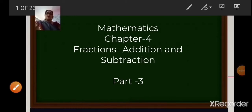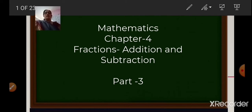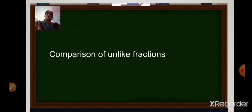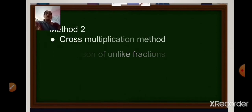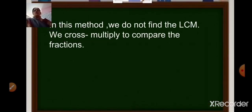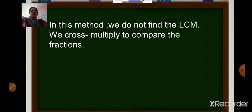Hello, Sairam students, welcome back to a mathematics subject. Today we will be doing part 3 of chapter 4. In the last class, we had already learned how to compare two unlike fractions using the LCM method. Today again we will be learning how to compare two unlike fractions, but with the second method, that is the cross multiplication method. In this method, we do not have to find the LCM; we just have to cross multiply to compare the fractions.